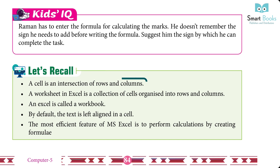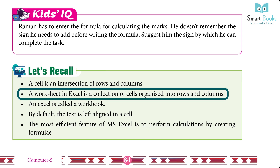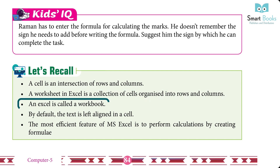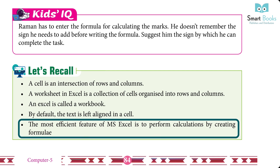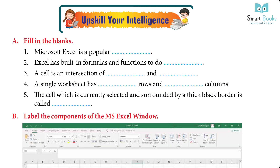Let's recall: A cell is an intersection of rows and columns. A worksheet in Excel is a collection of cells organized into rows and columns. An Excel file is called a workbook. By default, text is left-aligned in a cell. The most efficient feature of MS Excel is to perform calculations by creating formulas.